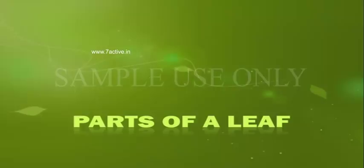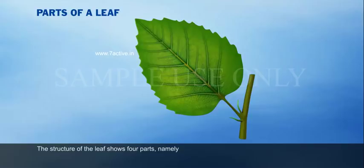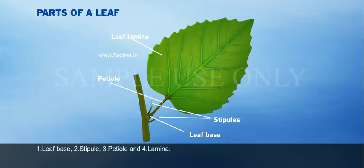Parts of a leaf. The structure of the leaf shows four parts, namely: one, leaf base; two, stipule; three, petiole; and four, lamina.